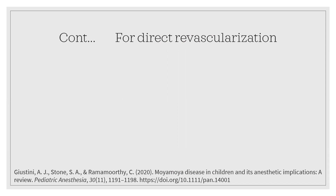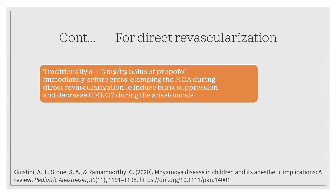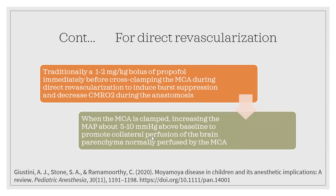What we can advise is that during MCA clamping, giving an agent to cause some burst suppression — mainly to decrease cerebral oxygen metabolism — is recommended. At the same time, increasing mean arterial pressure by 5 to 10 mmHg after MCA clamping can help promote collateral perfusion of the brain.